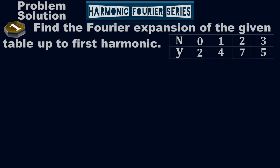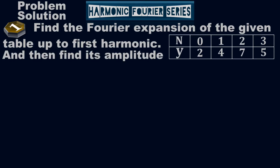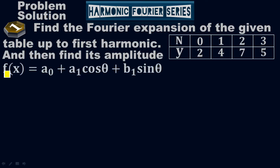The given table has N values starting from 0 up to 3 — that is, 0, 1, 2, 3 — and the Y values are 2, 4, 7, 5. We want to find the Fourier expansion up to first harmonic. The formula for the first harmonic Fourier series is f(x) = a₀ + a₁·cosθ + b₁·sinθ. This is the equation we'll use because the question asks for the first harmonic.